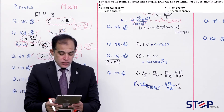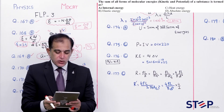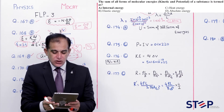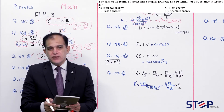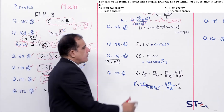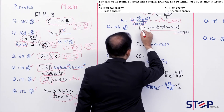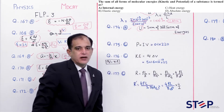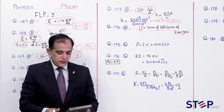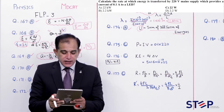Question number 174: Sum of all forms of molecular energies (kinetic and potential) of a substance is termed as internal energy. Chapter: Heat and Thermodynamics. Correct option: Alpha.